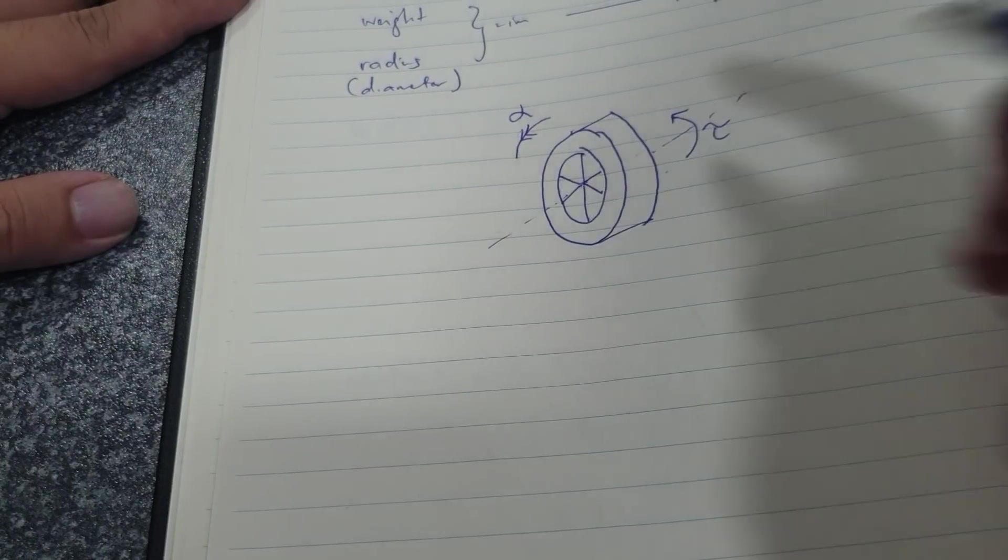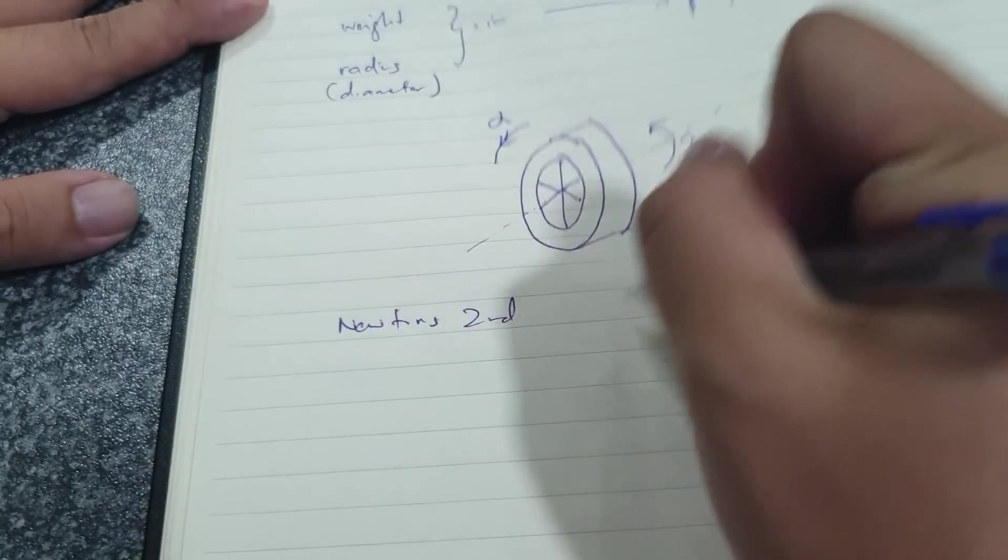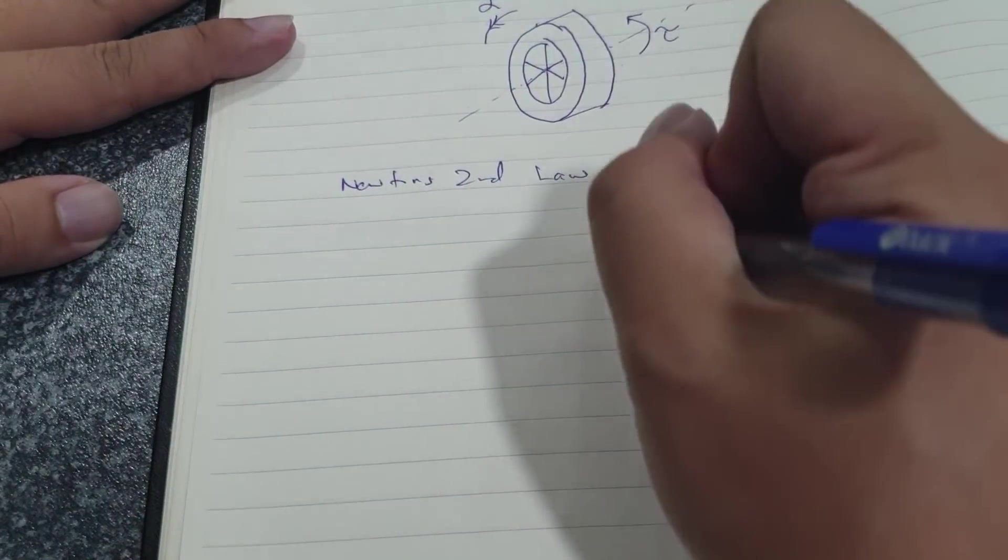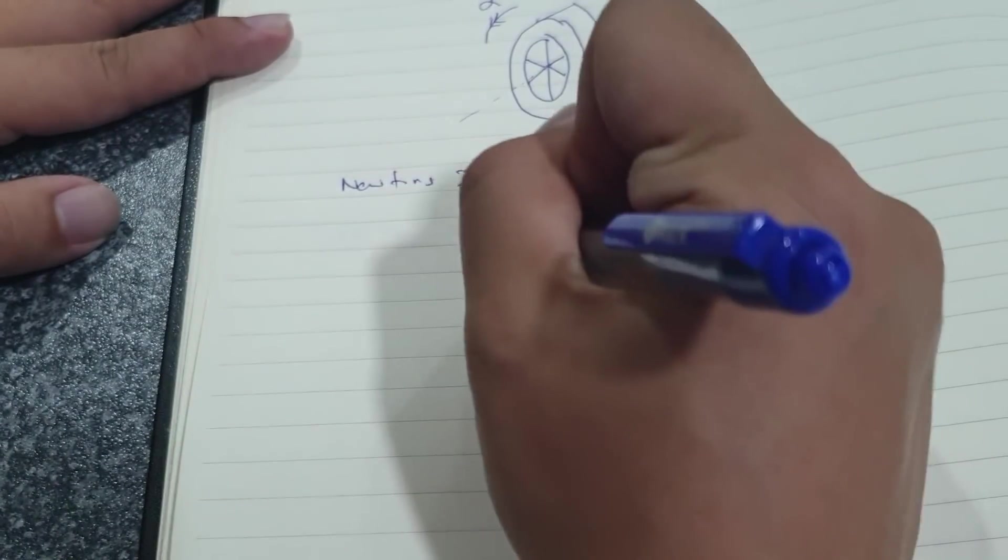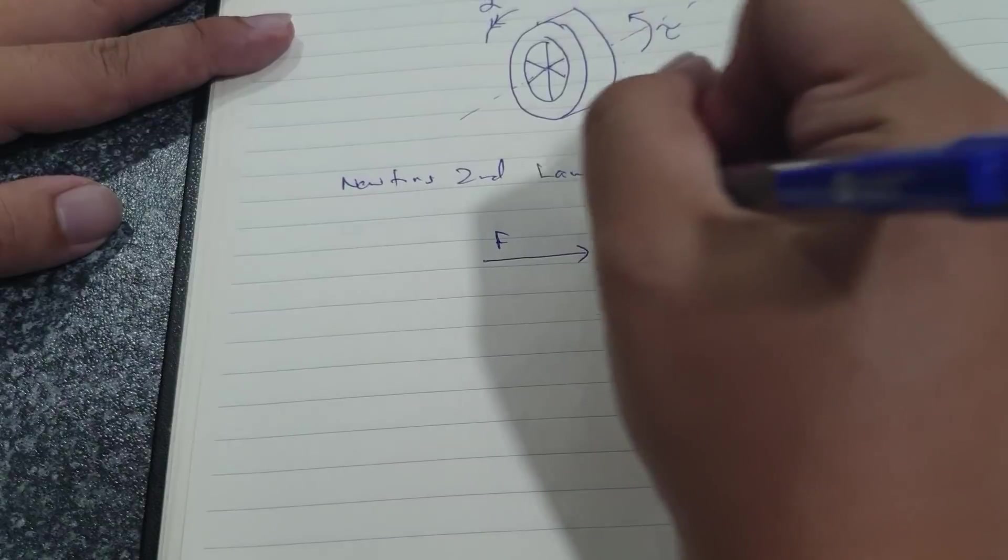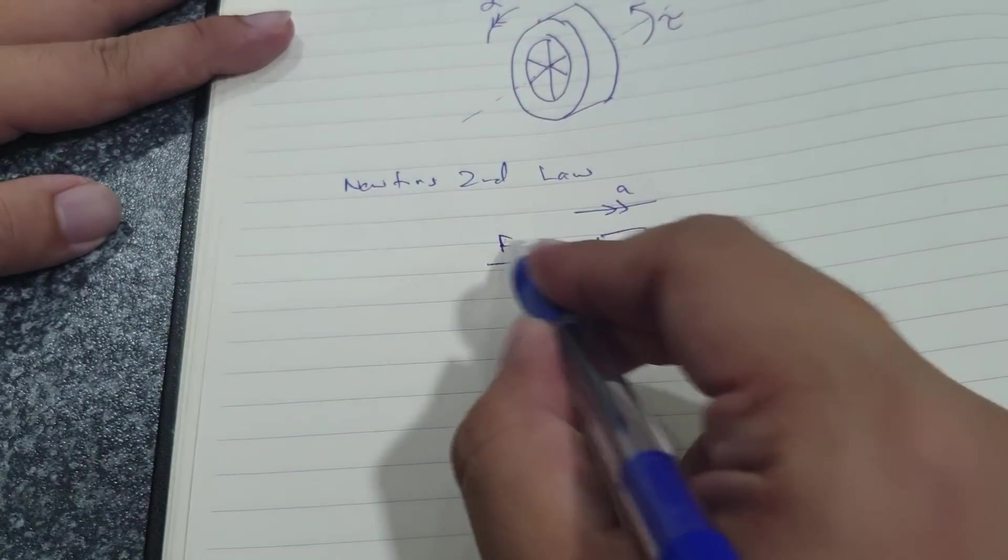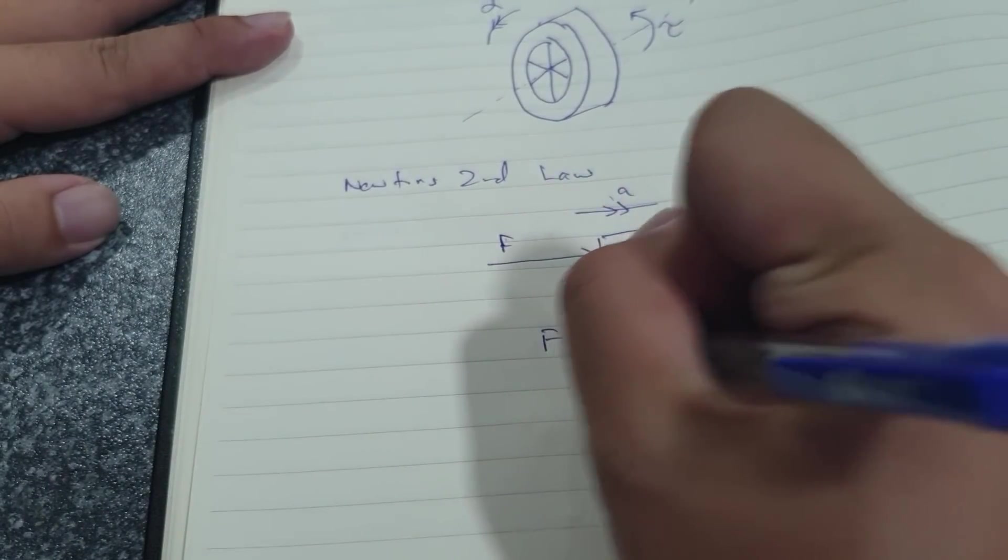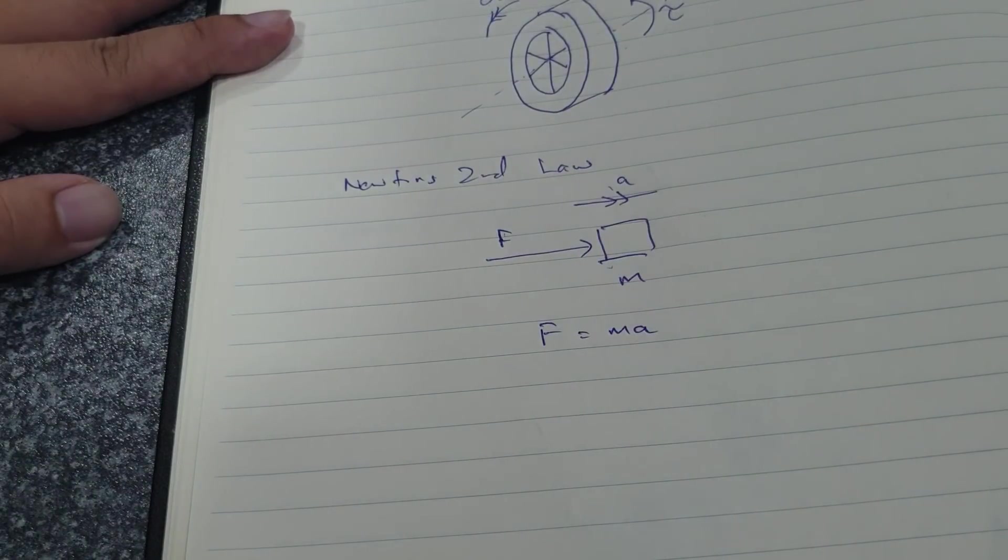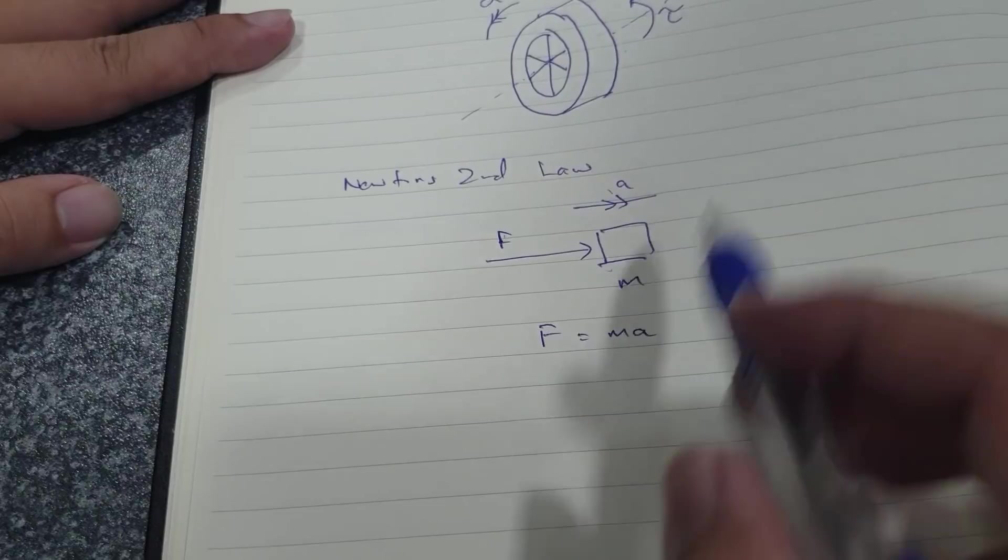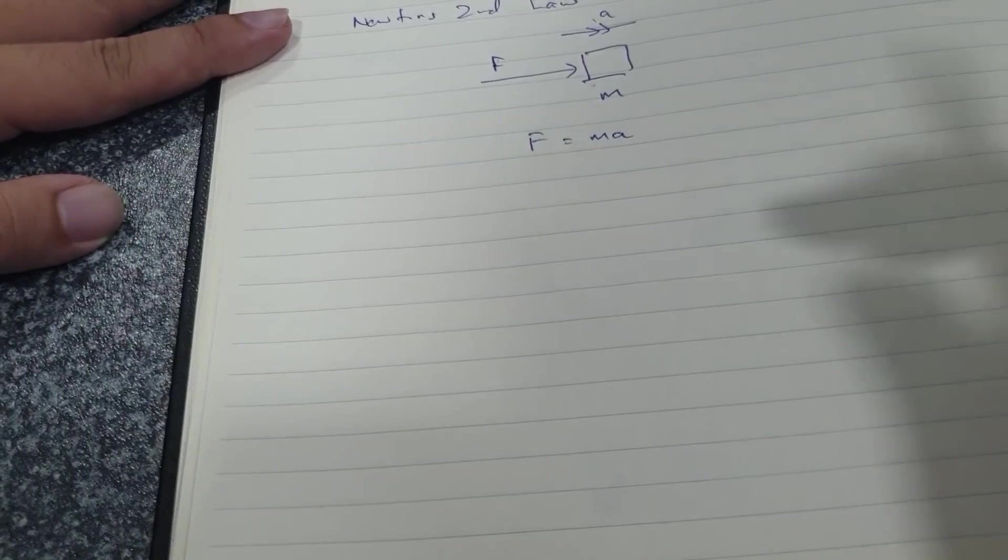Now we all know Newton's second law. Newton's second law on a straight line is that when you have an object of mass m, you push it with a force F, the object accelerates. It has an acceleration and these three variables are connected by this formula: F equals ma.